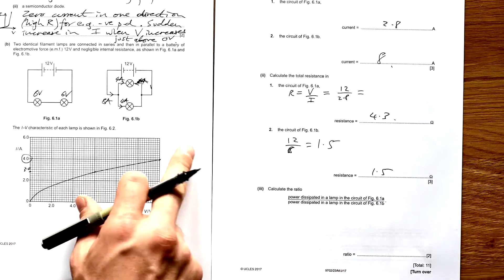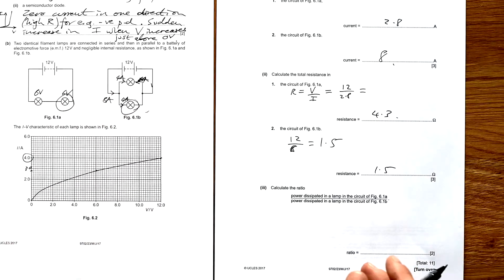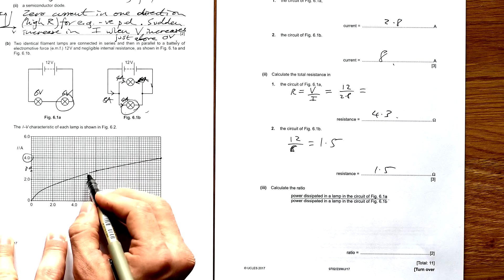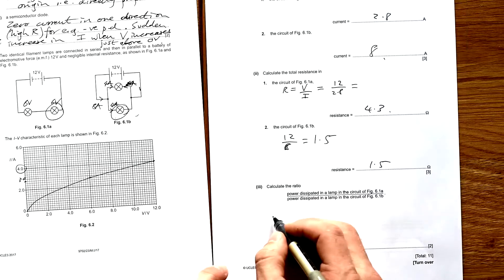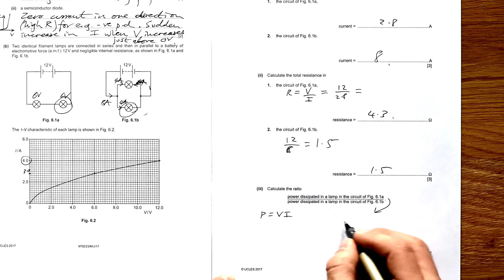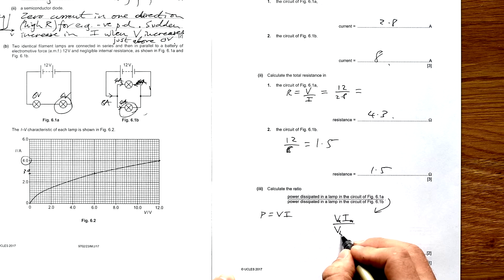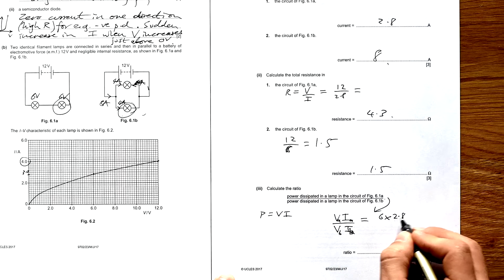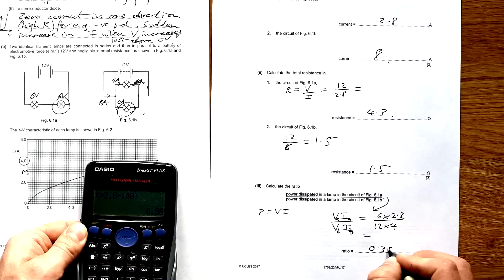Calculate the ratio of power dissipated in the series lamp to the parallel lamp. Since the resistances differ between circuits, we can't use I²R or V²/R, so we must use P equals VI. Power in series lamp divided by power in parallel lamp: (6 × 2.8) divided by (12 × 4) gives 0.35.